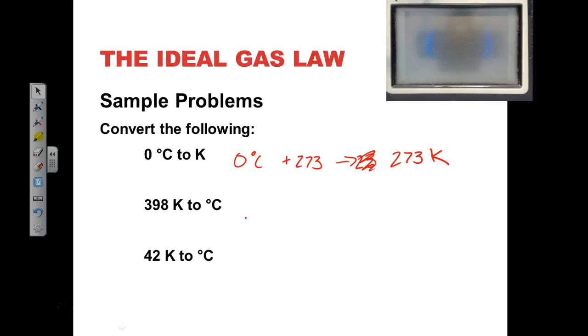So now if we're going to go backwards from Kelvin to degrees Celsius, 398 minus 273. So 398, helps if I turn my calculator on, 398 minus 273, that is 125 degrees Celsius. So with degrees, with Celsius, I use the degrees, with Kelvin I don't.